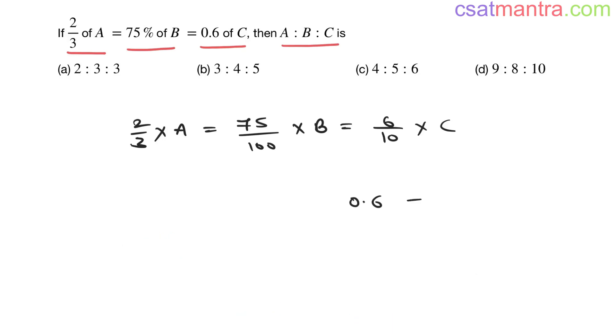Or you can do like this: 0.6 is there, you multiply and divide with 10. 10 by 10, value doesn't change. So 10 into 0.6 that is 6. 6 by 10. This is another way.